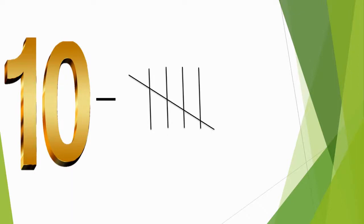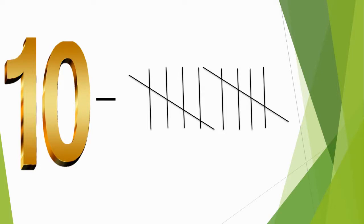Number 10 is represented by four standing lines and one slant line making a group of five, and another four standing lines and one slant line making a second group of five.